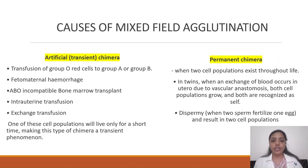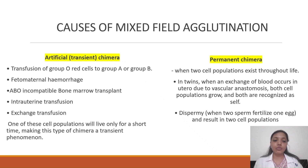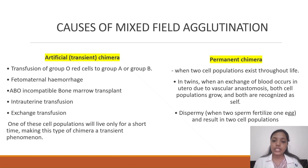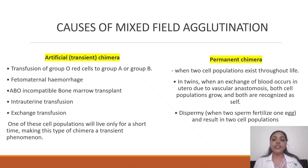Mixed field agglutination can be caused by artificial or permanent chimerism. Artificial chimerism occurs in transfusion of group O red cells to group A or B patients, fetomaternal hemorrhage, ABO-incompatible bone marrow transplant, intrauterine transfusion, and exchange transfusion — one cell population is transient. Permanent chimerism occurs when two cell populations exist throughout life, most commonly in twins where vascular anastomosis in utero causes exchange of blood, and in dispermy where two sperms fertilize one egg resulting in two cell populations.